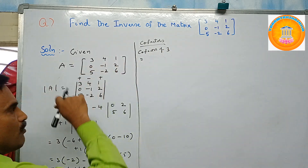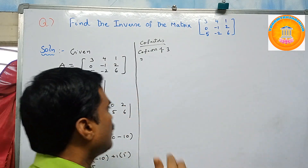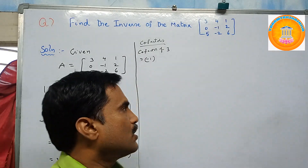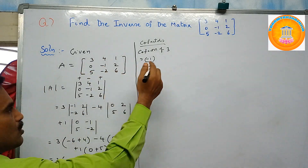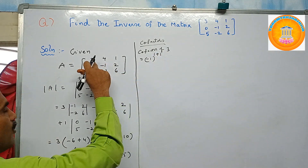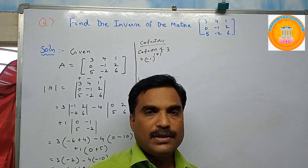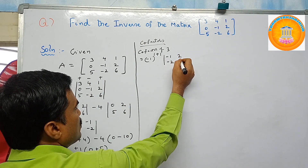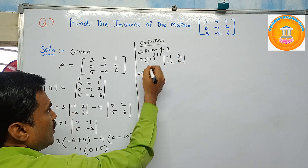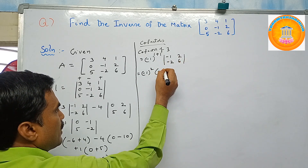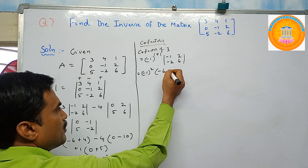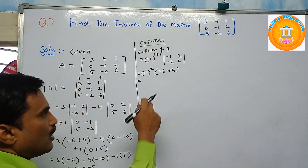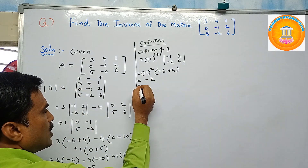Cofactor of three: three is in the first row and first column, so i equals one, j equals one. The cofactor formula is minus one to the power i plus j, into the minor of three. So minus one to the power of one plus one equals two. The minor is the determinant of minus one, two, minus two, six, which equals minus six plus four equals minus two. Since the power two is even, plus one times minus two gives cofactor of three equals minus two.